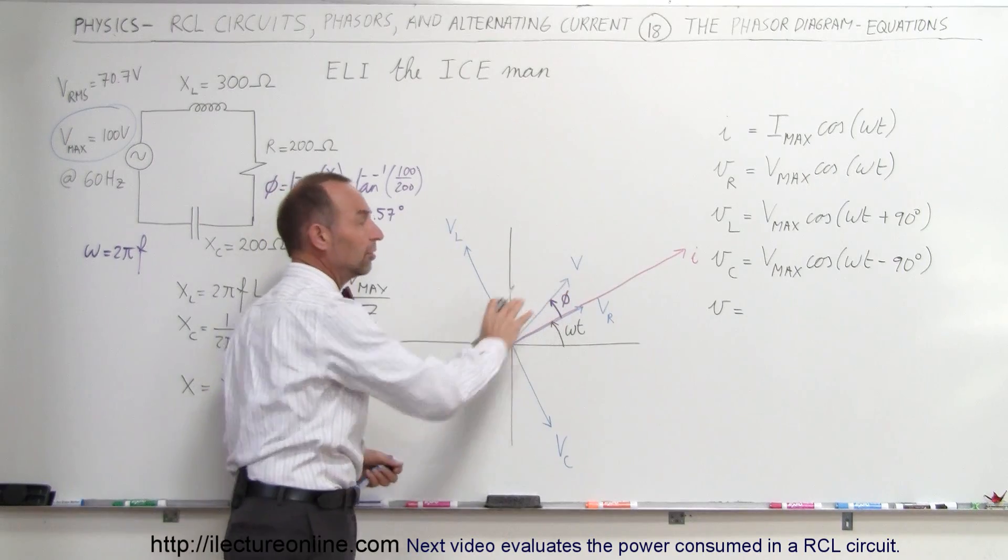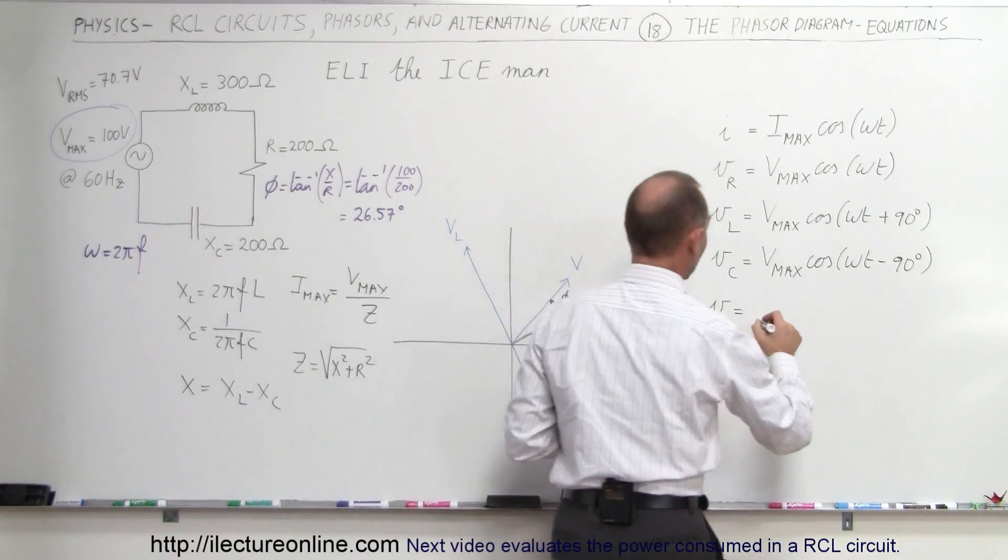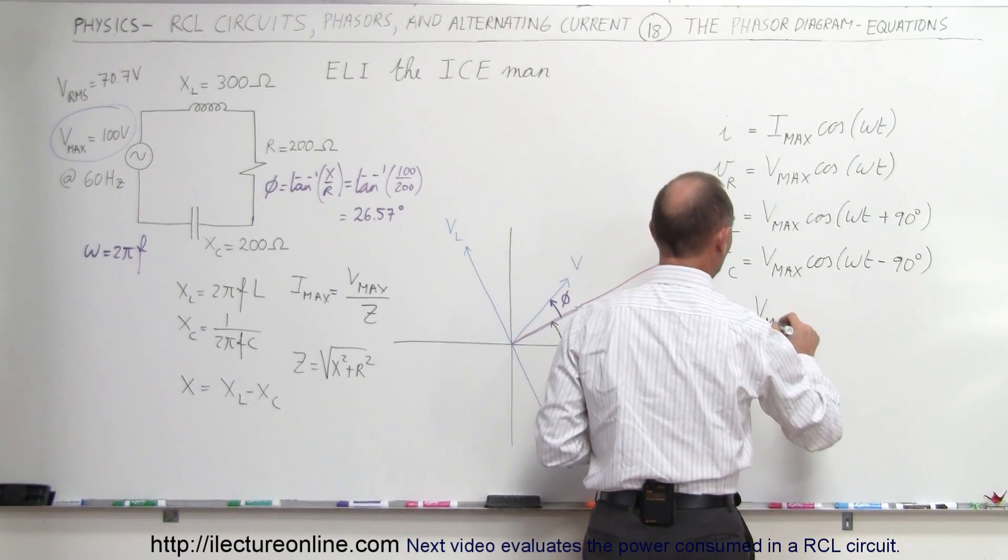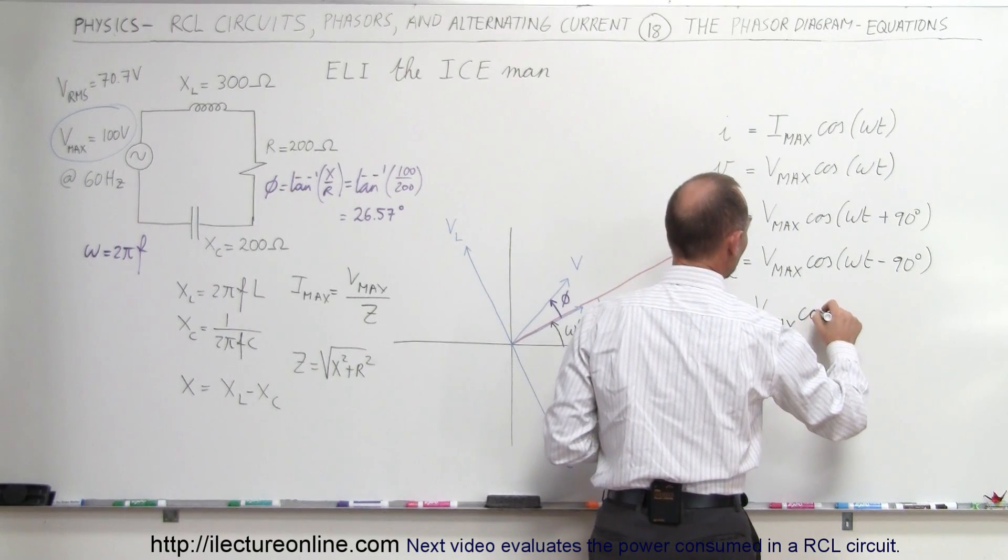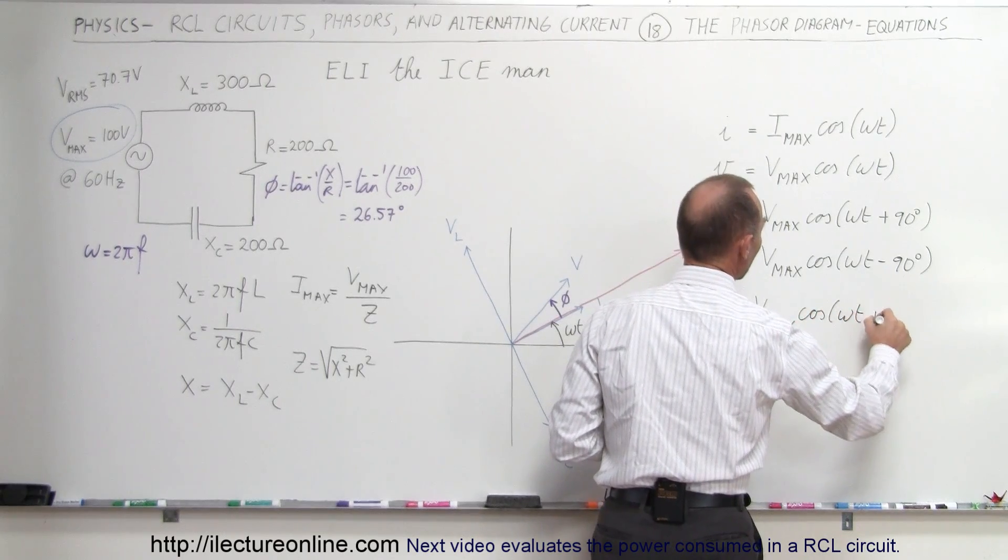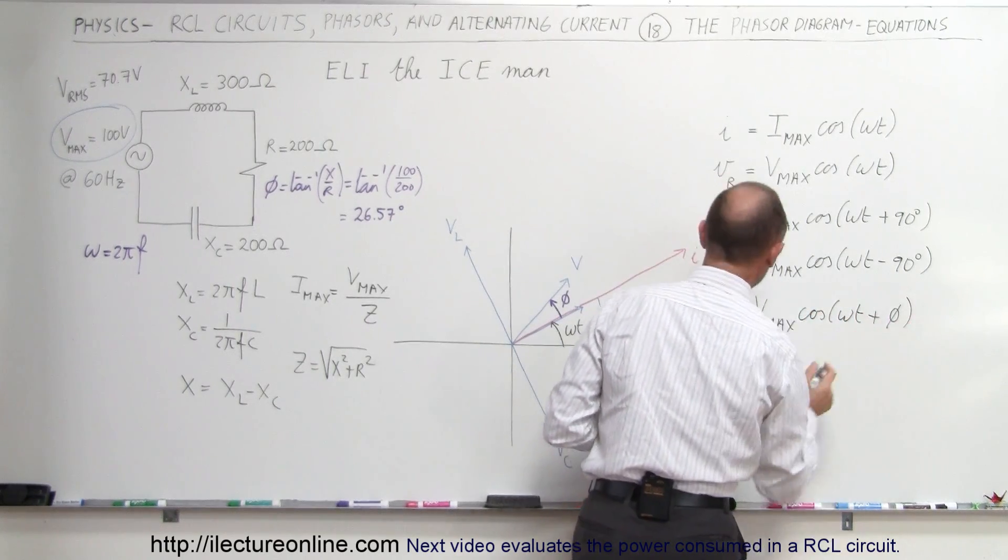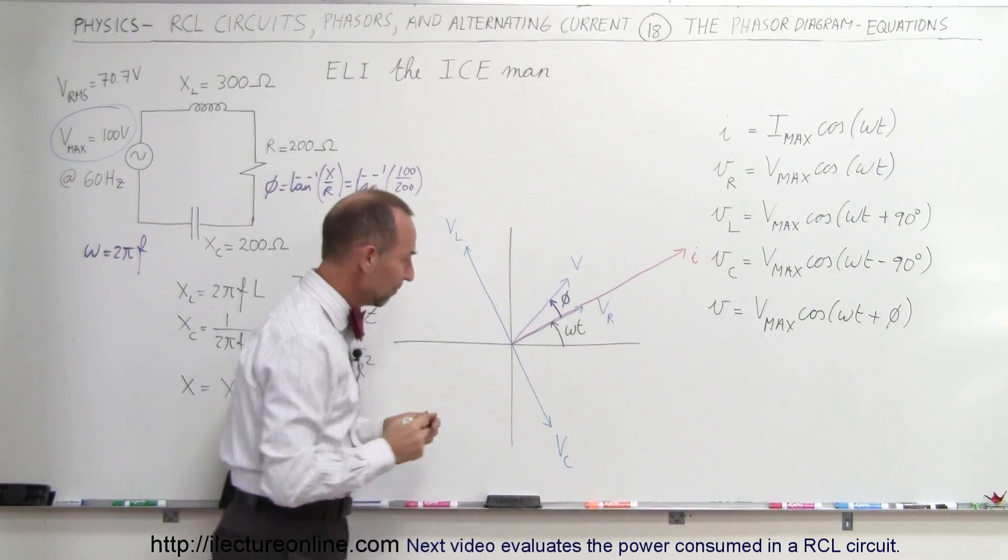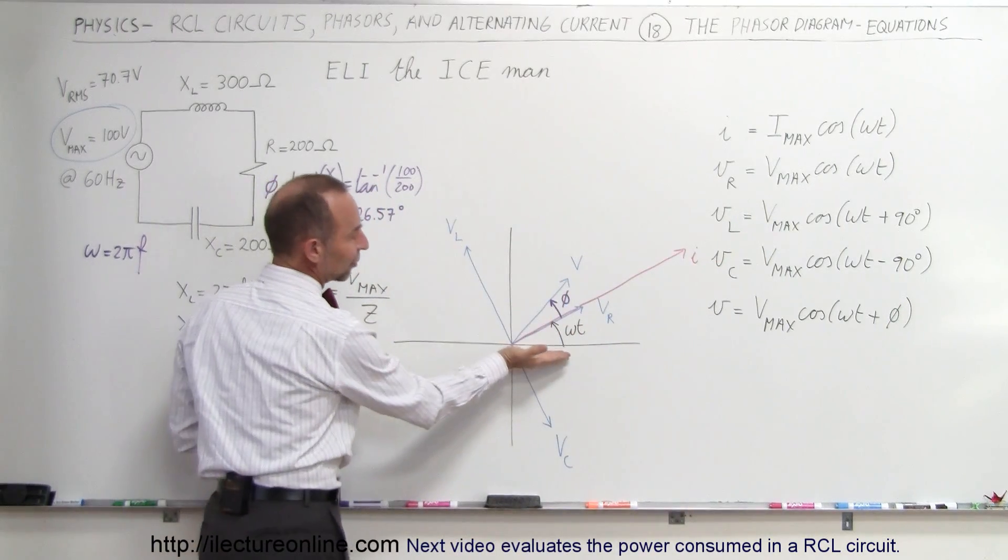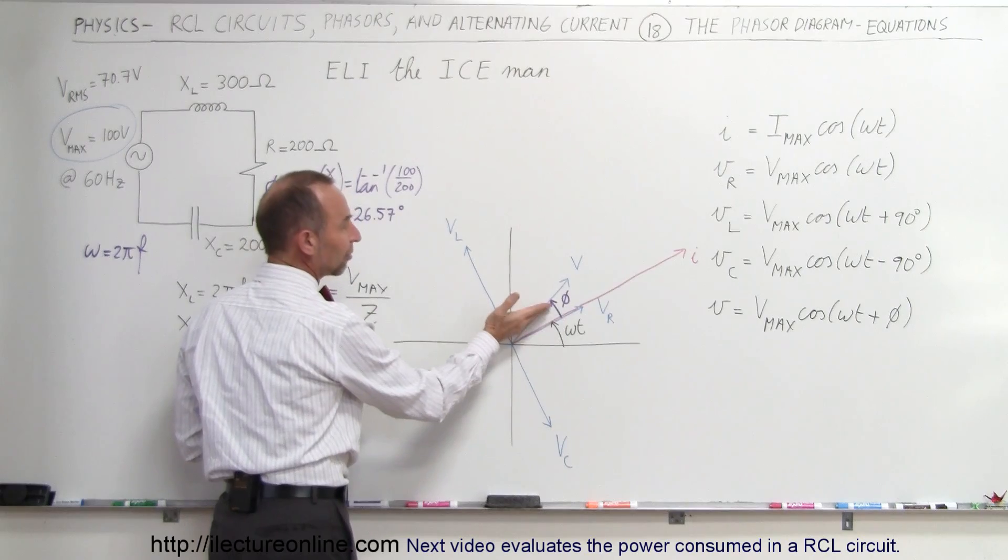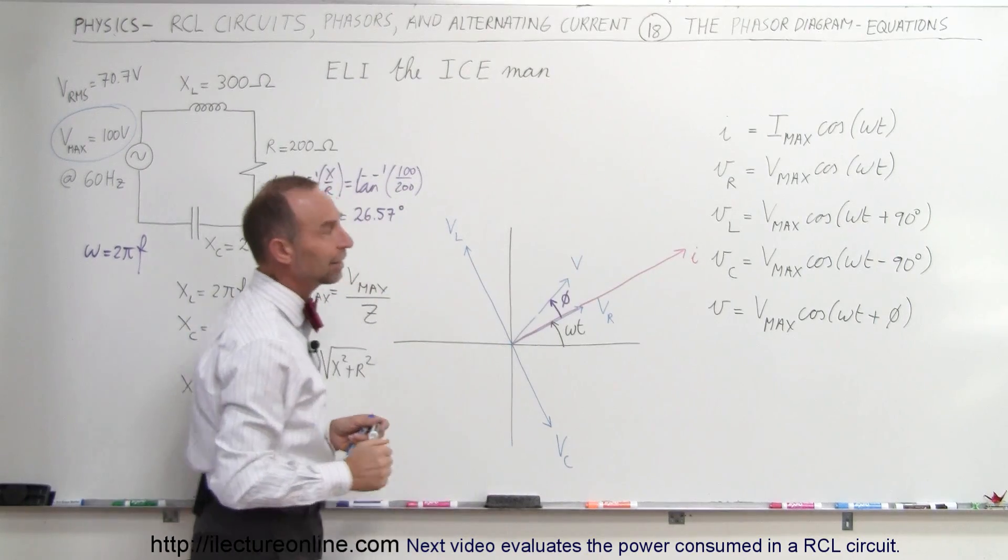And then finally, the voltage across the whole circuit, that would be equal to V max times the cosine of omega T, and we have to add the phase angle to get the proper voltage. Notice that instead of having just omega T, it would be omega T plus the phase angle, and that's what we have right there.